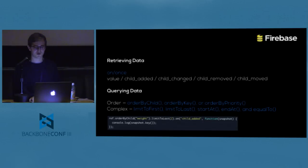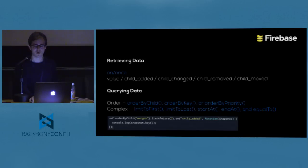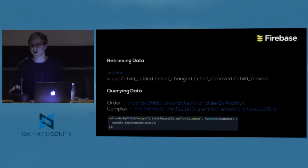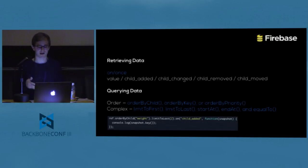Firebase makes important event guarantees: events will always be triggered when local state changes, and events will always eventually reflect the correct state of data — even in cases where local operations or timing cause temporary differences, such as a temporary loss of network. So it's not completely offline, but if you go offline while the app is running it keeps working, local events keep triggering, and as soon as it gets back online it syncs.